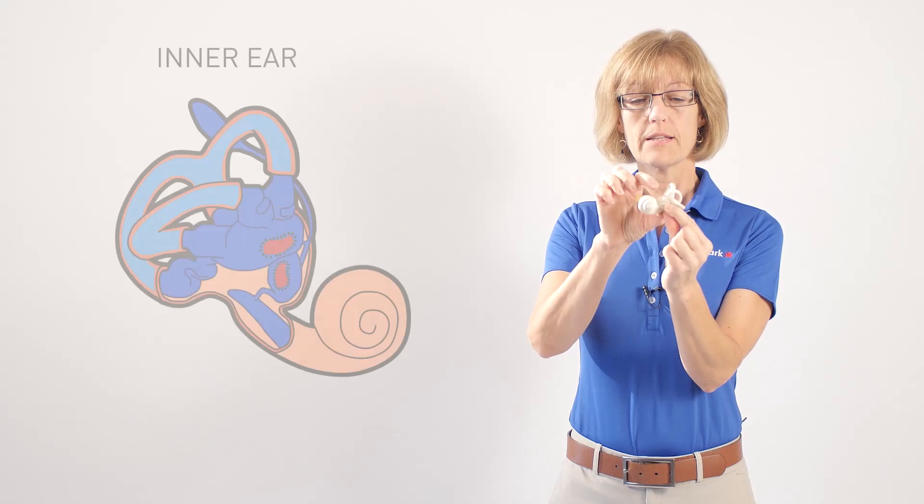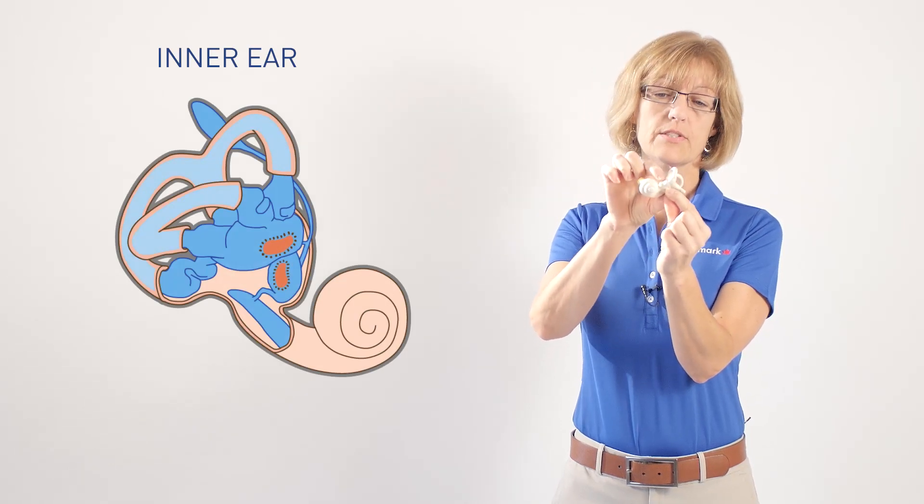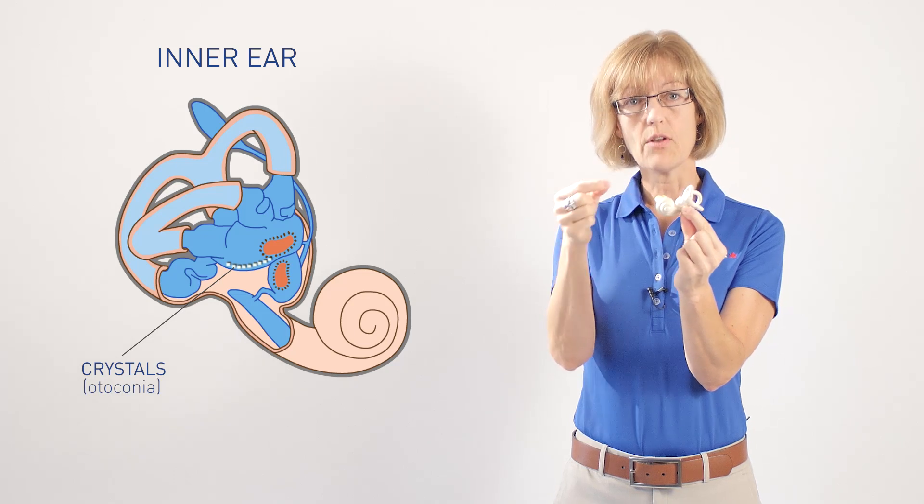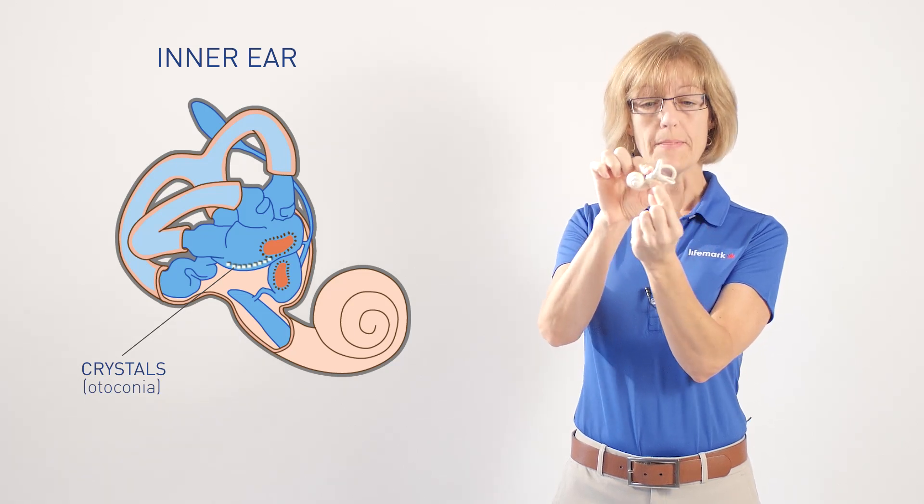In the inner ear, we've got a little chamber in the center here that's got little crystals in it, and sometimes those crystals can get dislodged from the gel that normally holds them in there.